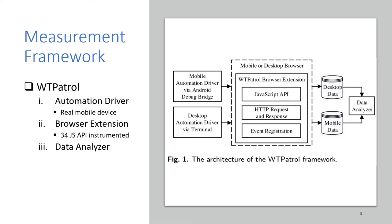With this background and motivation, we designed and built a measurement framework named WTPatTrue, which is short for web tracking. The key component is a browser extension in which we instrumented 34 JavaScript APIs. Those APIs could be leveraged for web tracking according to past research studies. With this instrumentation, any access to those APIs could be recorded. The browser extension can also record all HTTP traffic during page loading and all events triggered during page execution. This browser extension can be installed in a mobile Firefox browser or desktop Firefox browser.